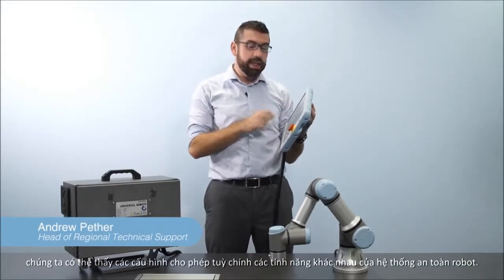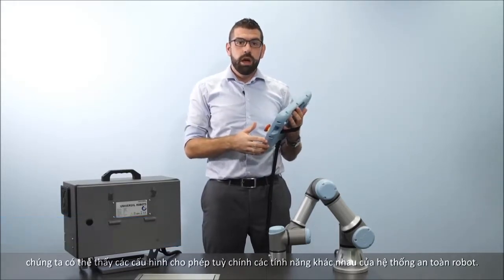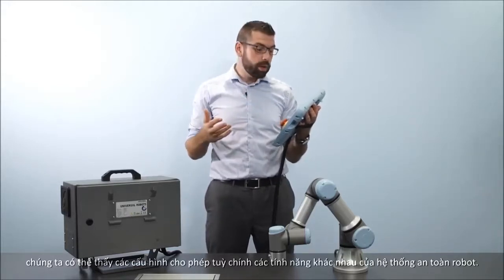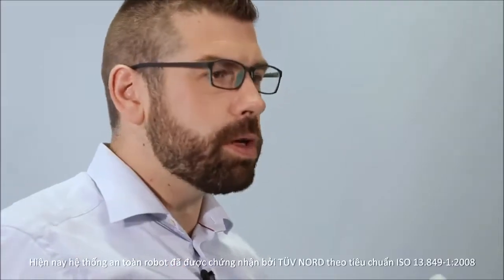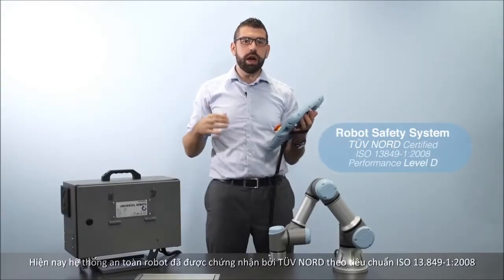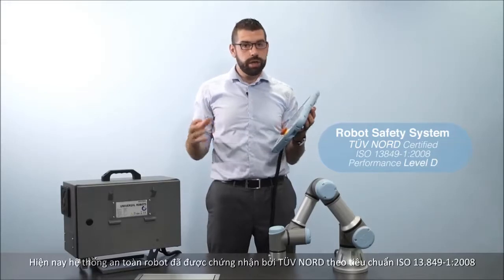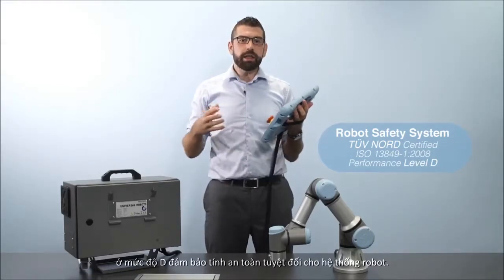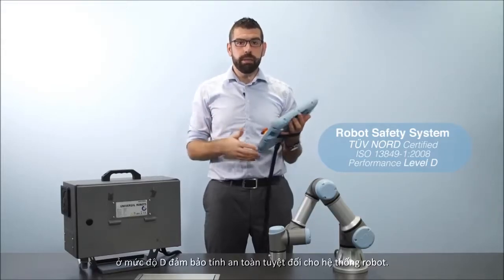Under the installation tab on the robot teach pendant, we can find the safety configuration menu, which allows us to set up all the different aspects of the robot safety system. This whole robot safety system is certified by TÜV Nord according to ISO 13849-1:2008 to be Performance Level D, meaning that the whole system is very reliable.